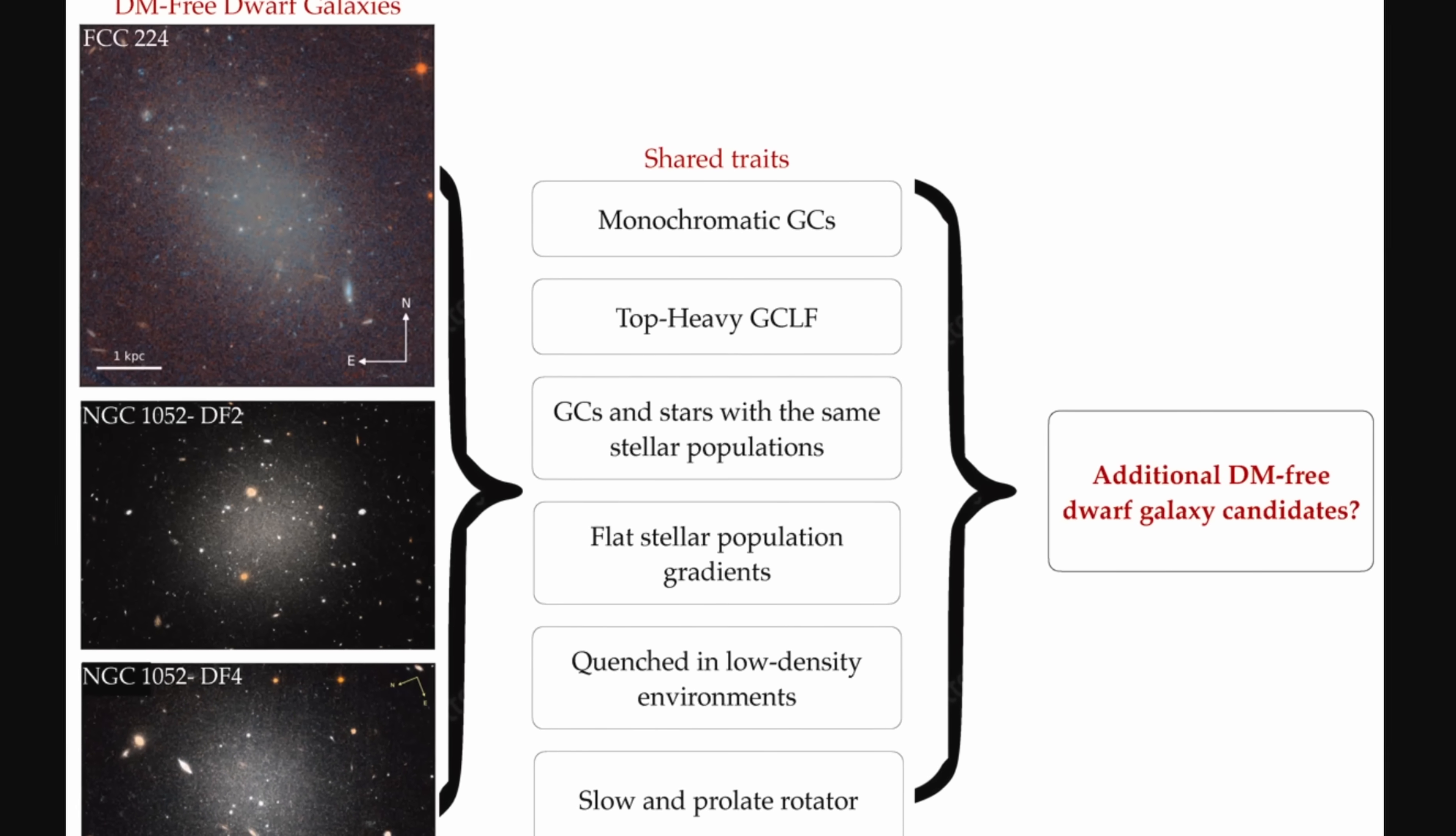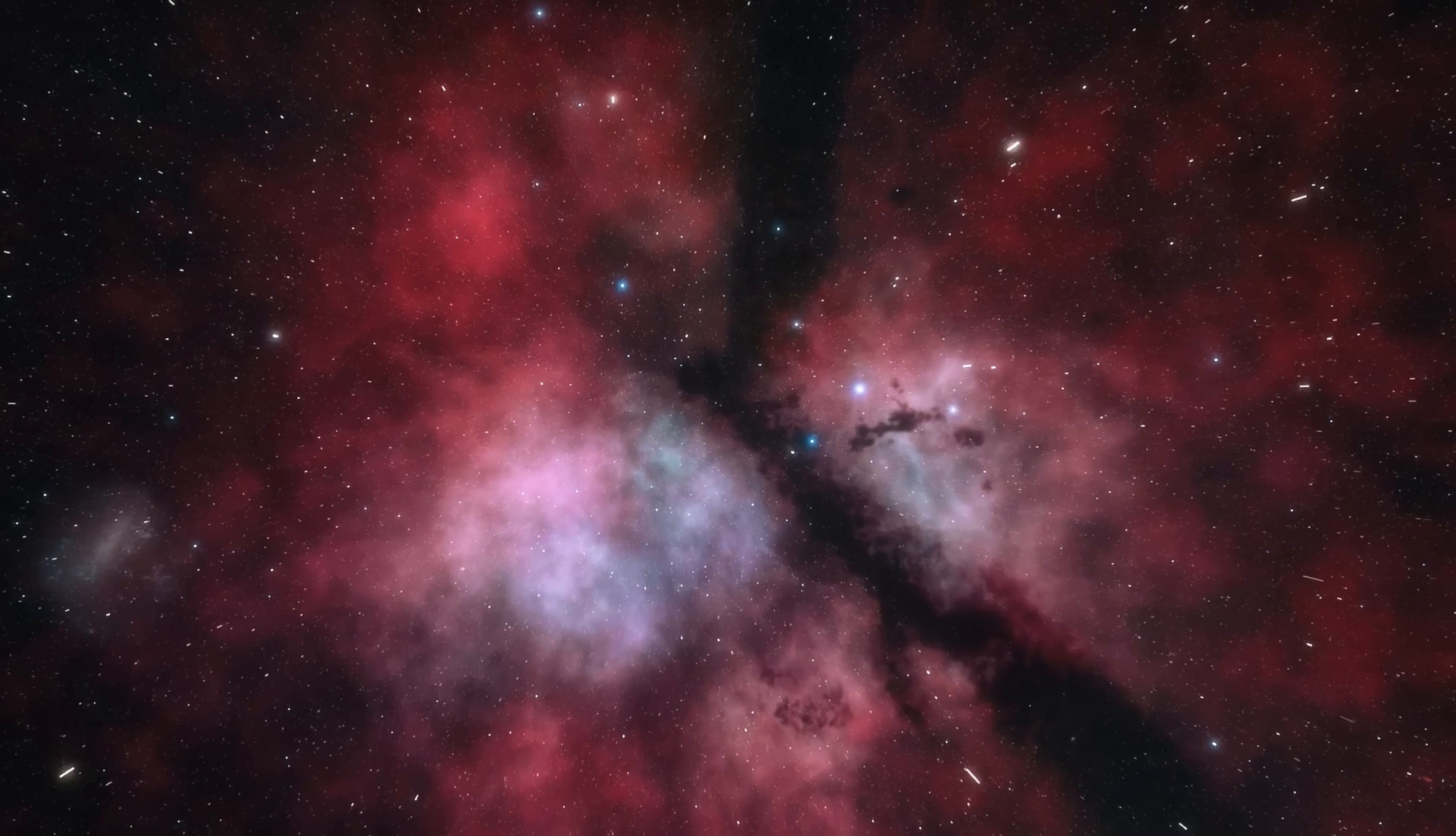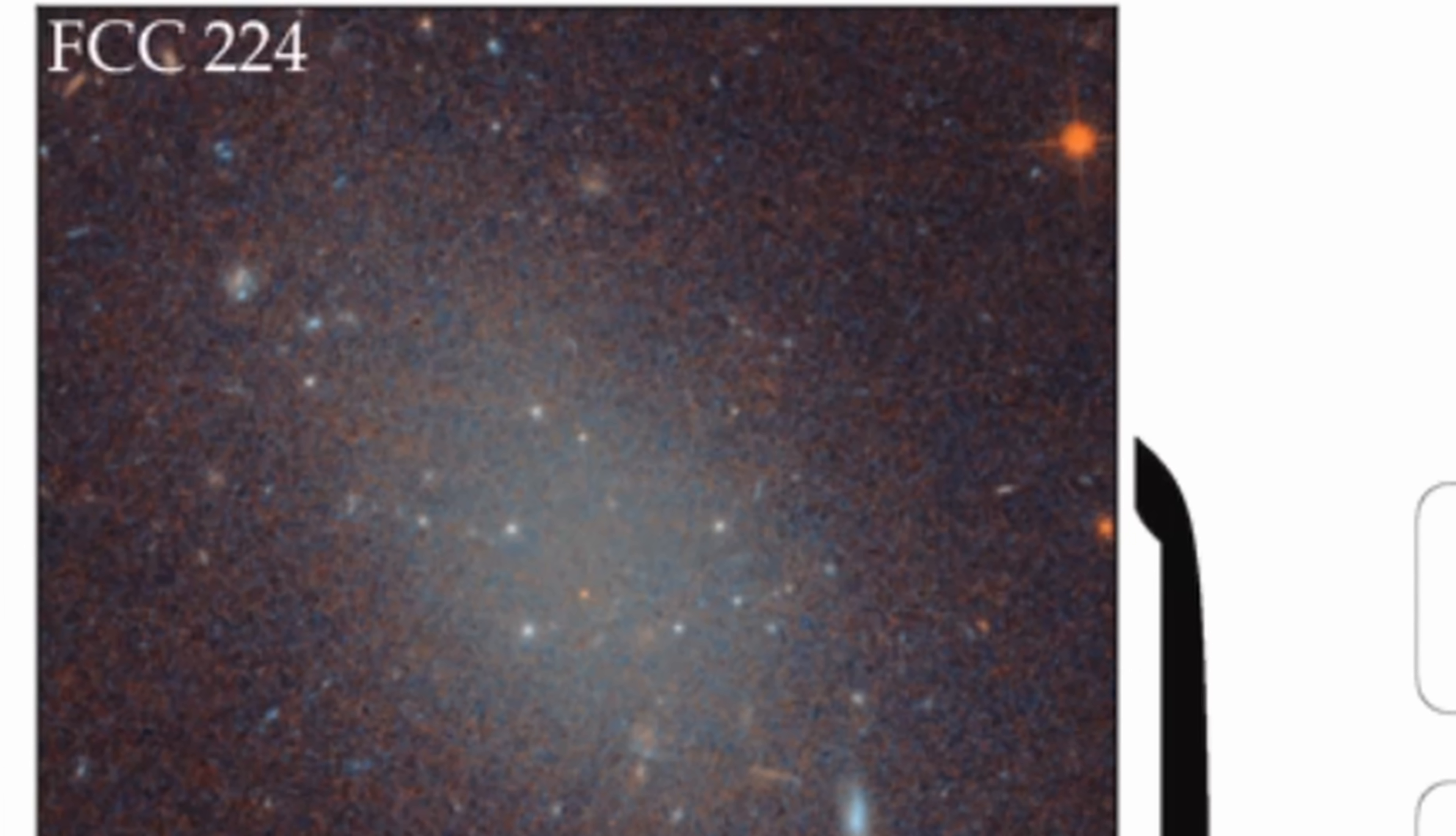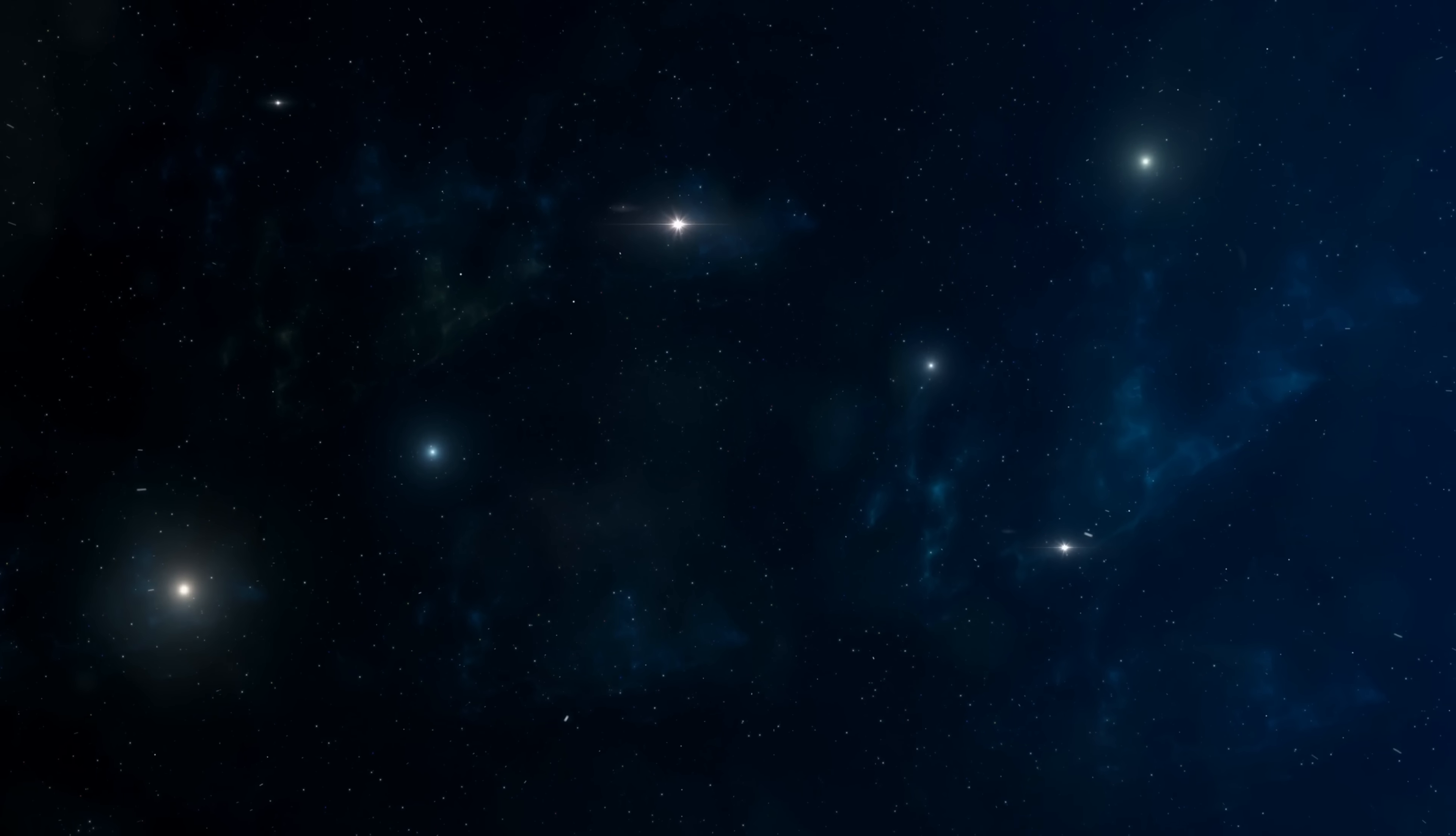And it might even be some kind of a new class of galaxies, which is basically what this new study is all about. Here there's new compelling evidence for dark matter-free or deficient dwarf galaxies. In this case, a galaxy known as FCC 224, a UDG located on the outskirts of the Fornax cluster, approximately 60 million light years away from planet Earth.